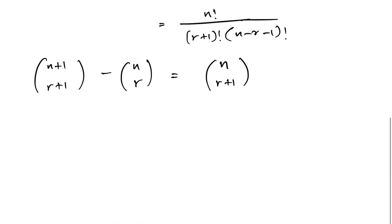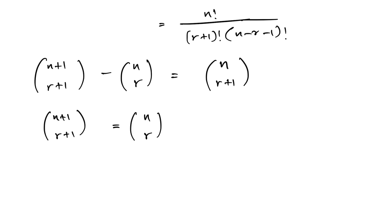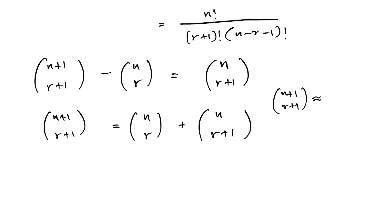So we can write n+1 choose r+1 equals n choose r plus n choose r+1. Also, notice that when n approaches infinity, n+1 choose r+1 is approximately equal to n choose r.